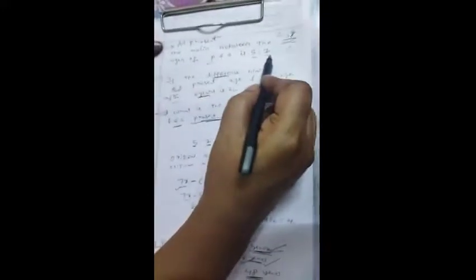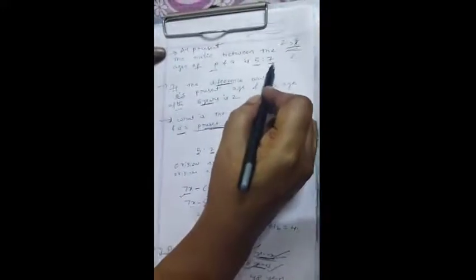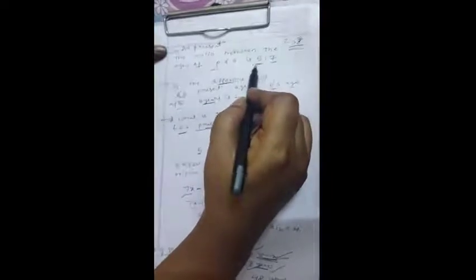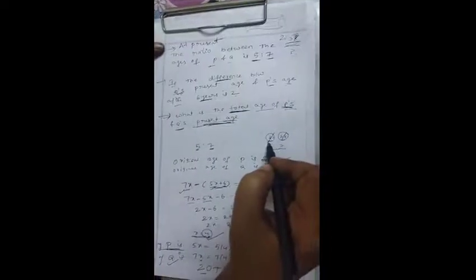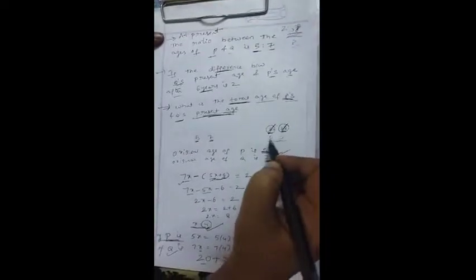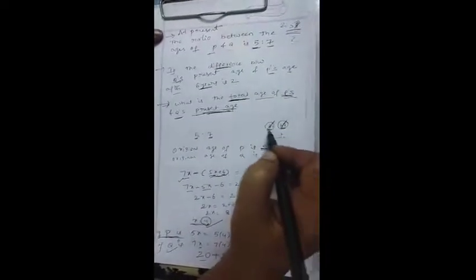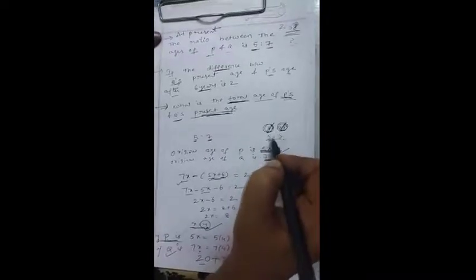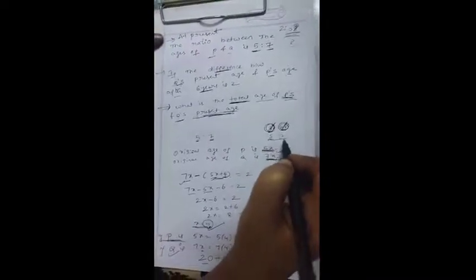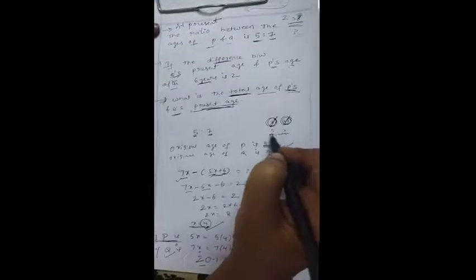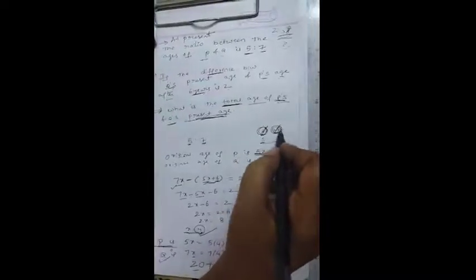In the question, they have given the ratio between the ages of P and Q is 5 to 7. So this is the ratio actually, but not the age. For example, suppose 20 years age and 28 years age, after cancellation we are getting 5 to 7. Means some original age is there, but 5 and 7 is just ratio only. We need to find according to this ratio what is the original age.